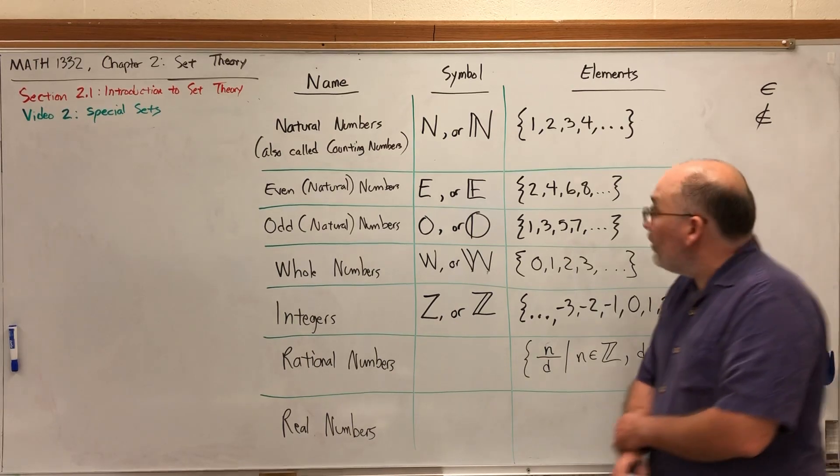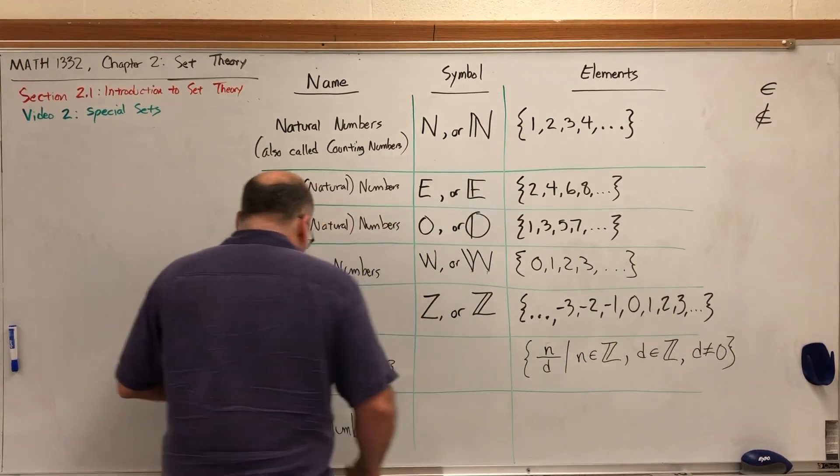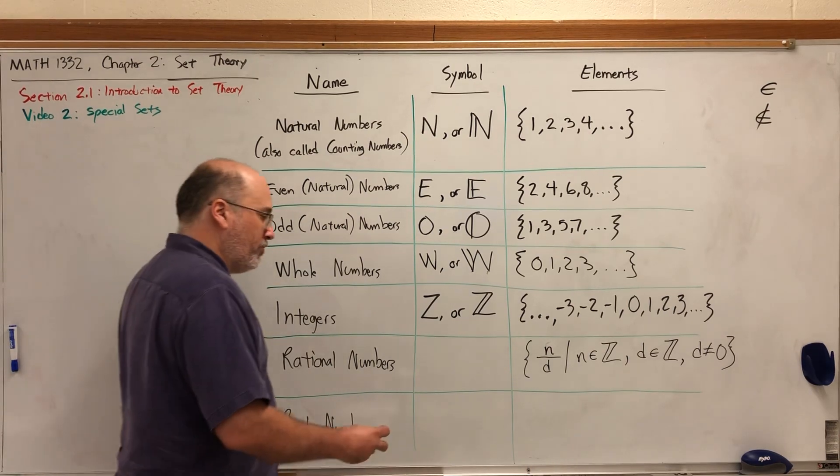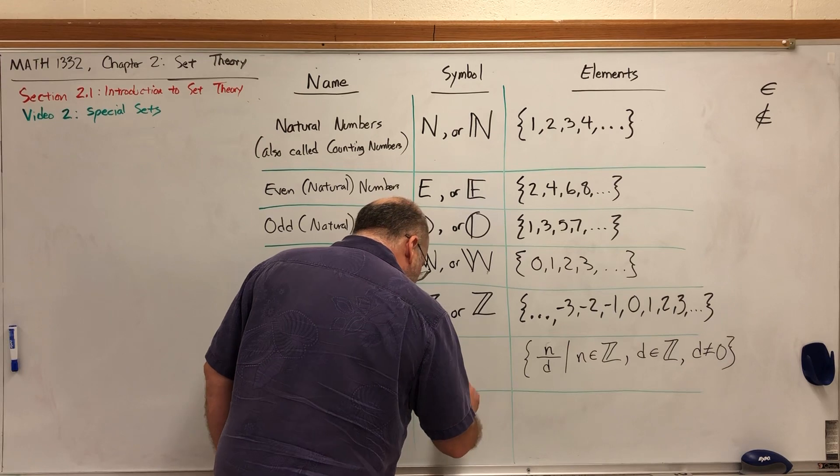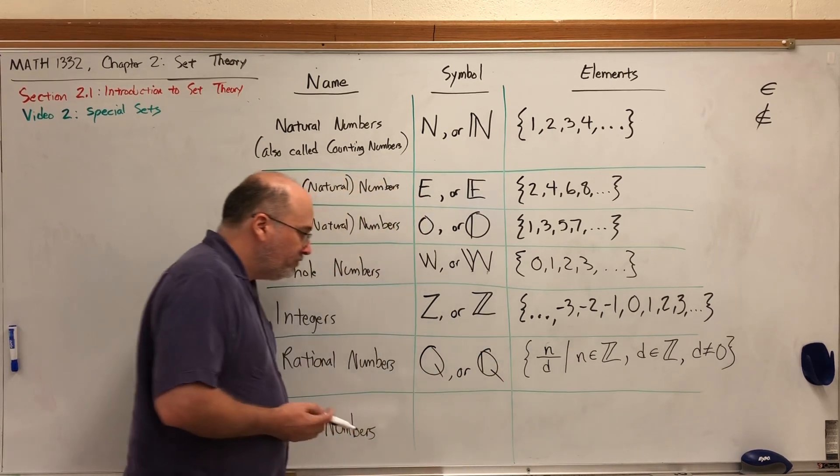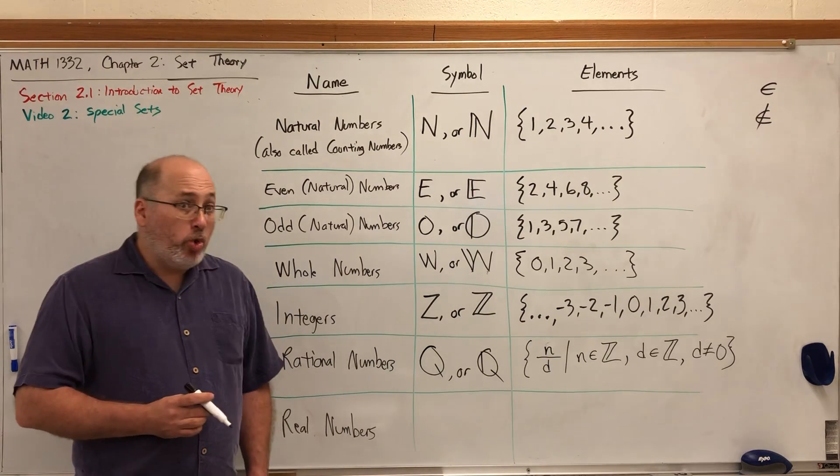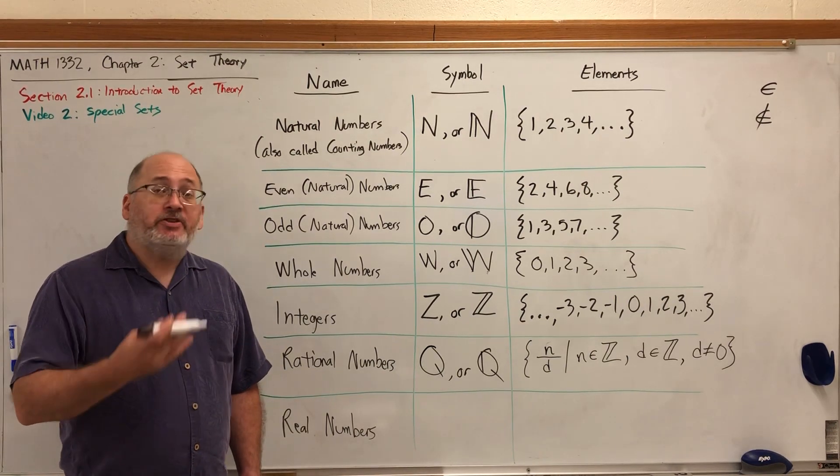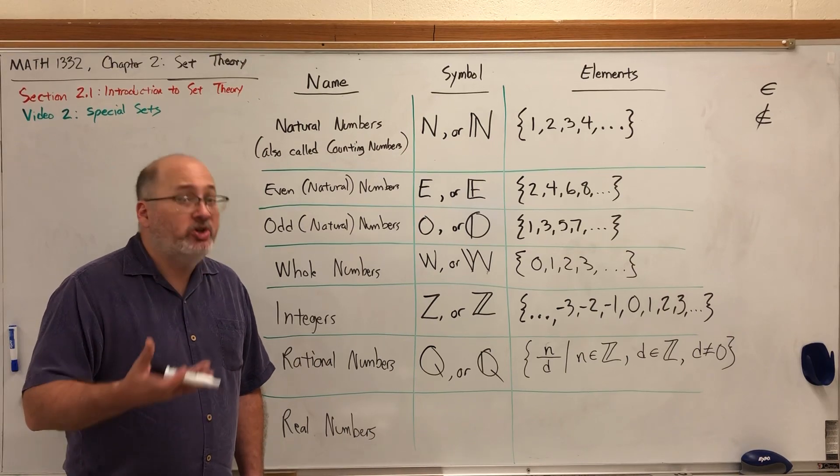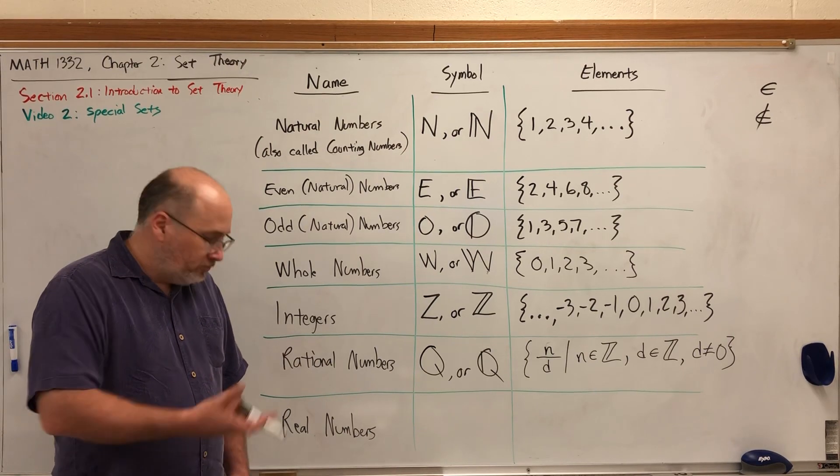The symbol for rational numbers is not the capital R. The symbol for rational numbers is a capital Q or a double script Q as I will always write it. The Q stands for quotient, which means the answer to a division problem, because a fraction is just a division problem.